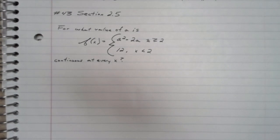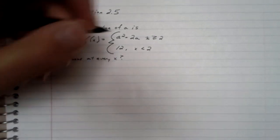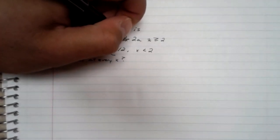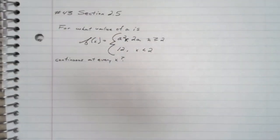So for what value of a is f of x continuous at every x? Are you sure that a squared minus 2a should have been x? Oh, my bad. There should be x in there.